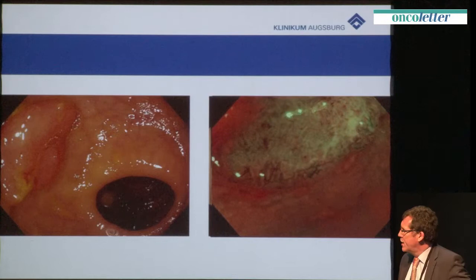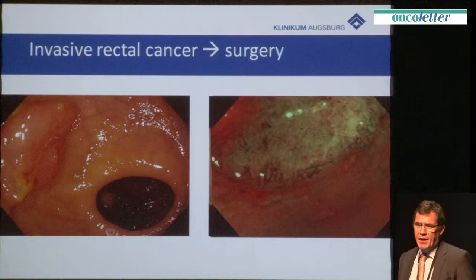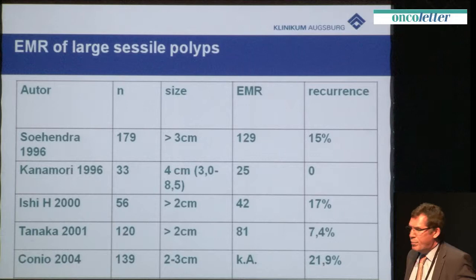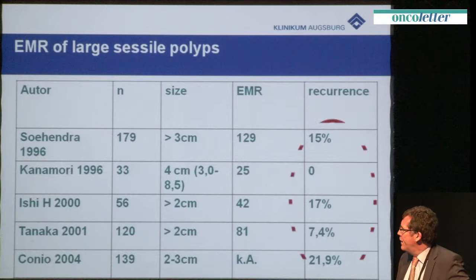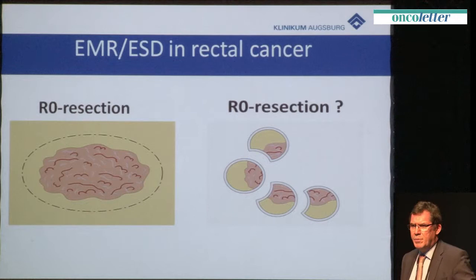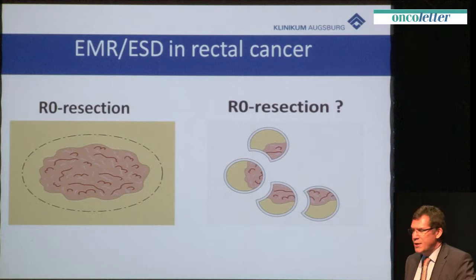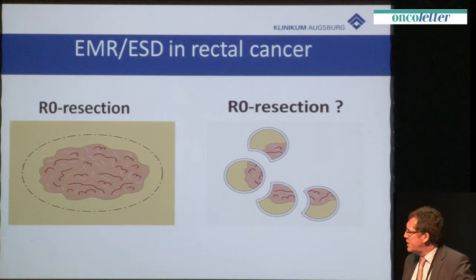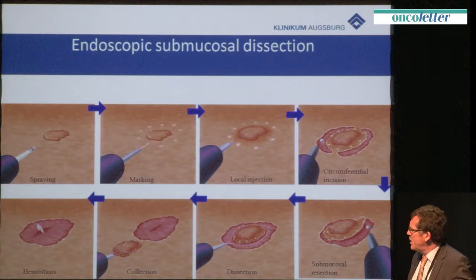We can discuss whether TEM might be an option in this case, as it allows exact staging of the whole submucosa, but it will never be a candidate for ESD. Another problem is the size of the lesion: lesions larger than 2 centimeters have a recurrence rate of 20 to 30 percent, and complete R0 resection is not achievable. Several colleagues in Japan do not consider piecemeal EMR as R0 resection. ESD is a technique which allows resection of large areas of the mucosa.